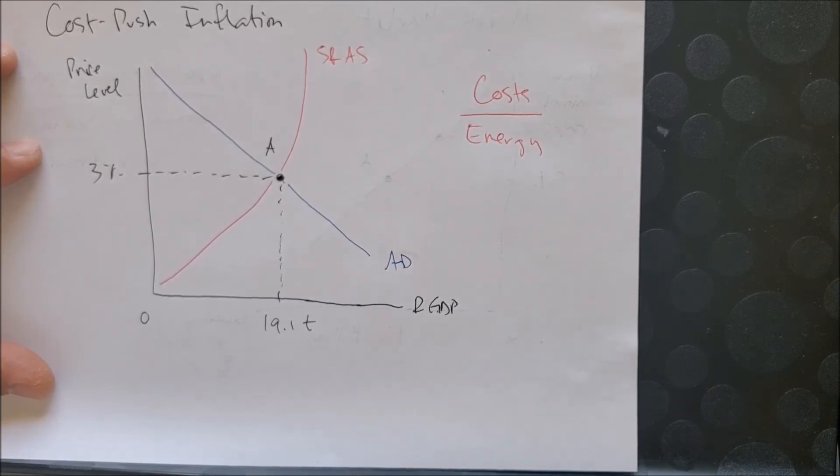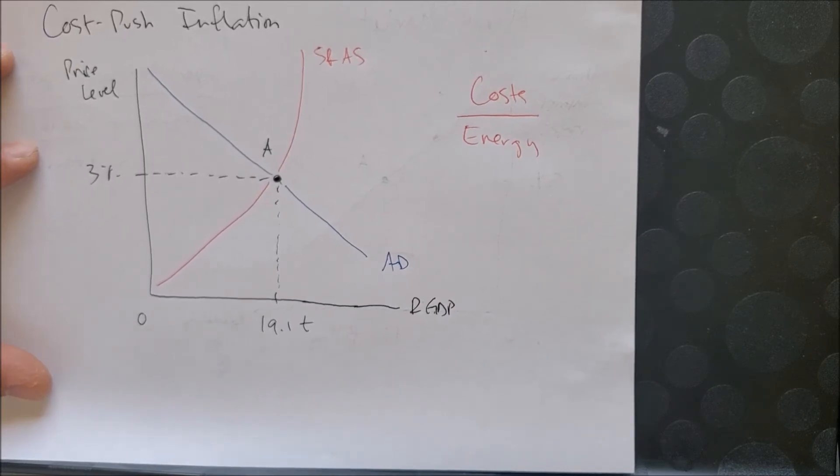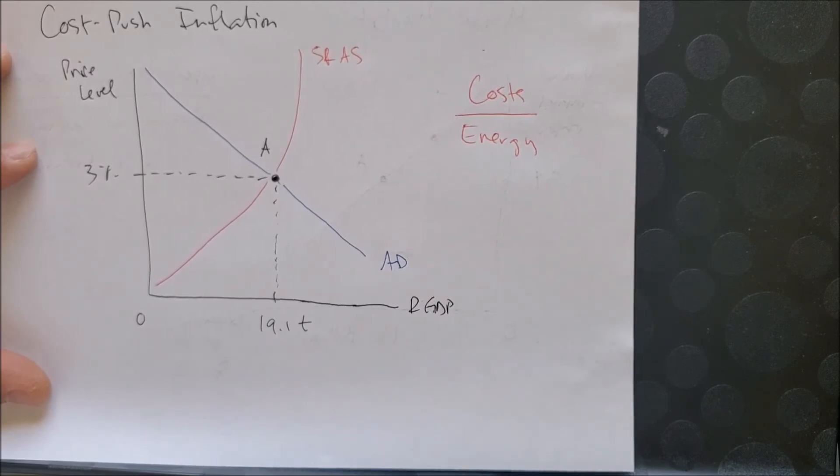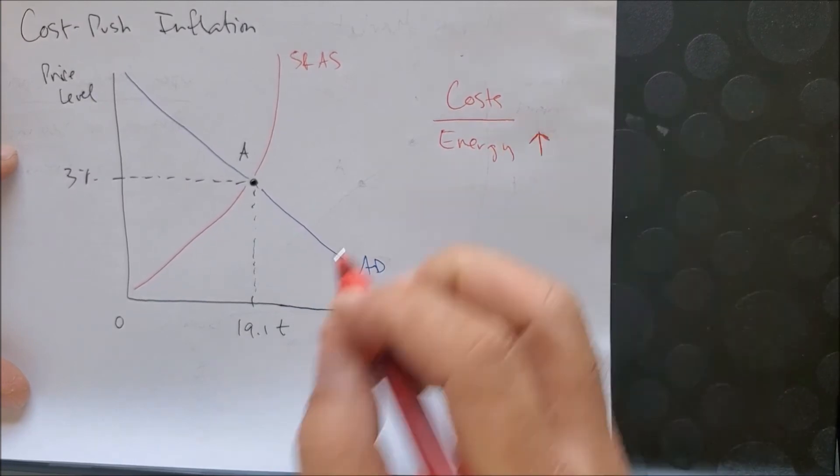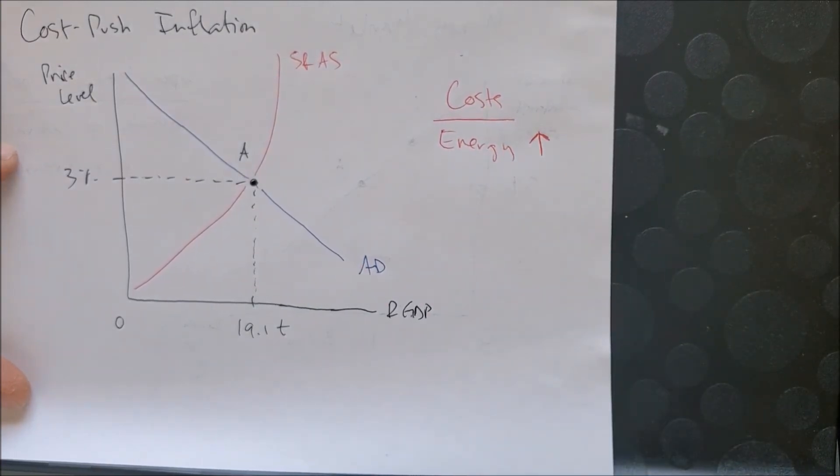OPEC has gotten together since the 1960s to discuss ways to influence the price of oil per barrel. If OPEC decreases the supply of petroleum, energy costs will increase because when there is less of something, the value increases.